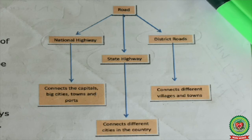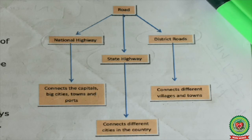State highways are controlled by the state government, and district roads are managed by the State Public Works Department or Zilla Parishad. On page 107, there is a picture showing the classification of roads. National highways connect capitals, big cities, towns, and ports; state highways connect different cities within the country; and district roads connect different villages and towns.